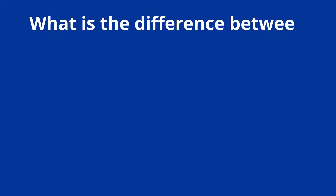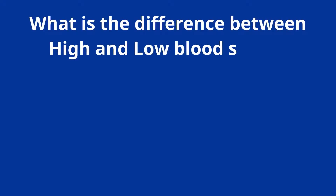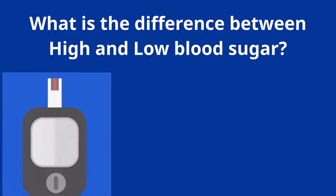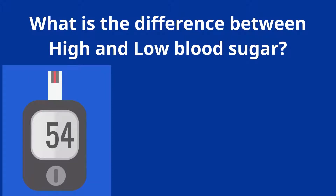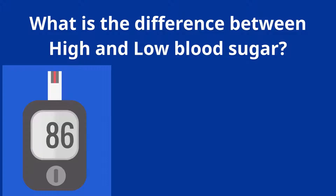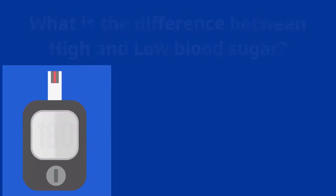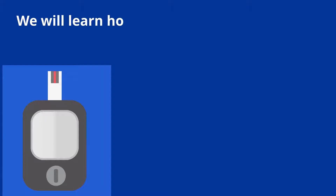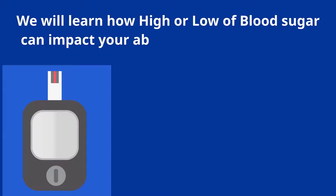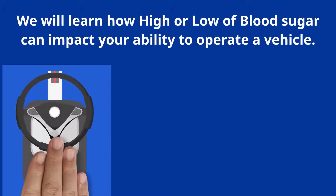What is the difference between high and low blood sugar? In Lesson 2, you learned what it means to monitor your diabetes — in other words, how to make sure your blood sugar is at a normal level, not too high or too low. In Lesson 3, we will learn how high or low blood sugar can impact your ability to operate a vehicle.